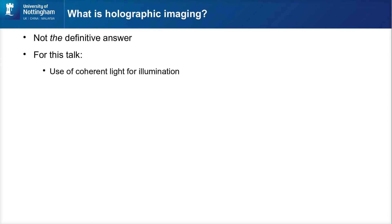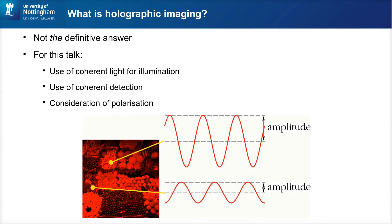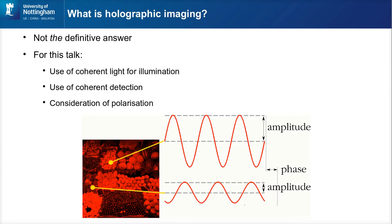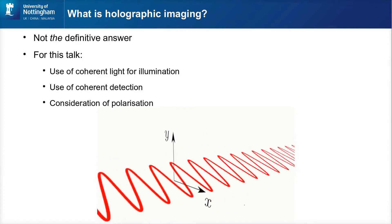So what is holographic imaging? For the purposes of this talk, what I mean is using coherent light for illumination of the sample and also using coherent detection of the light coming back — so you're detecting the phase of the light at any given point. In addition, I'm also going to include consideration of polarization. If you're talking about highly coherent light from a laser, you also need to consider the polarization.